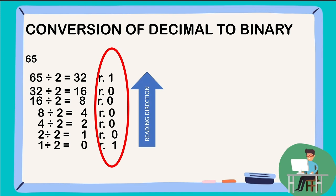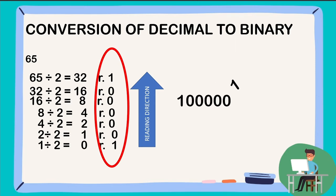Therefore, the number 65 in binary is 1000 0001.